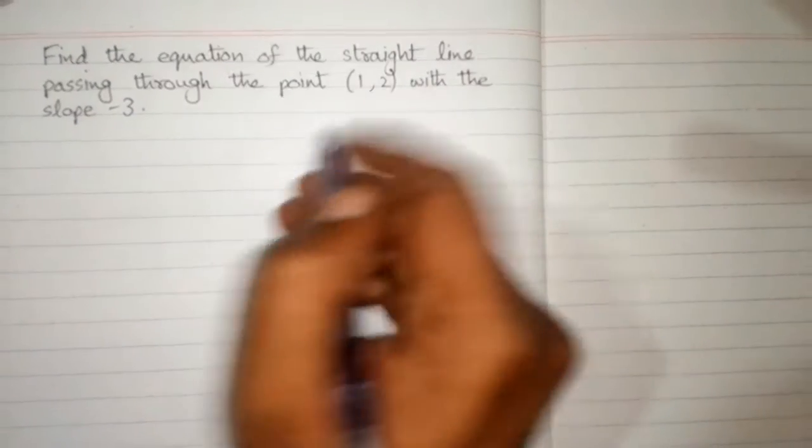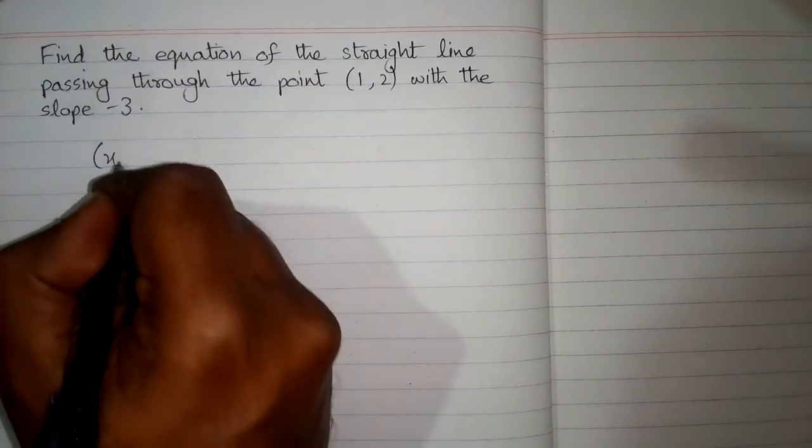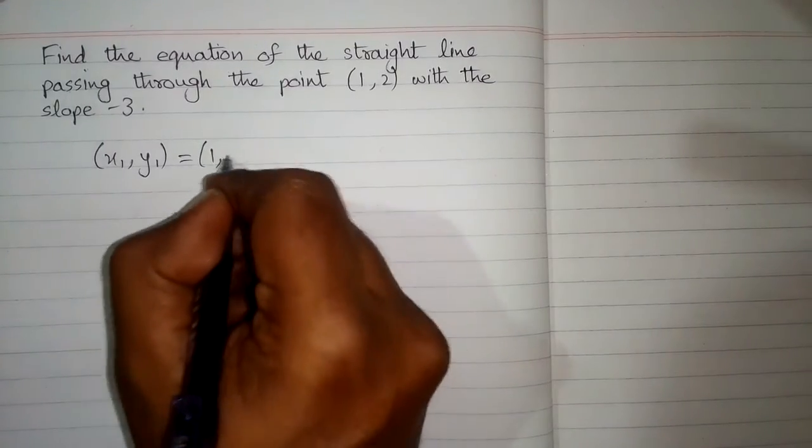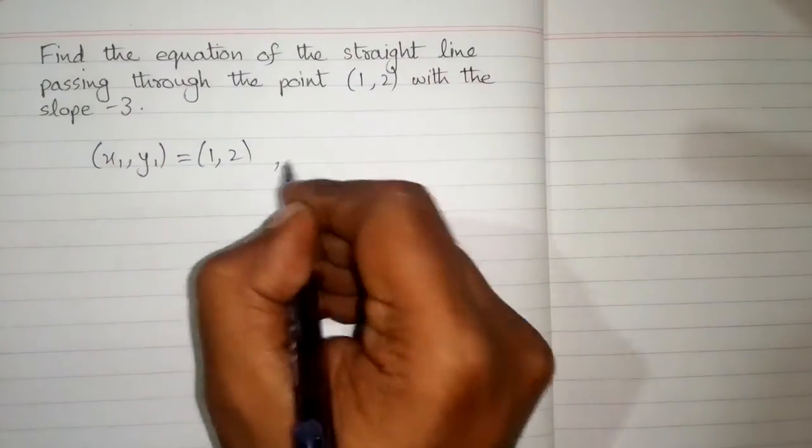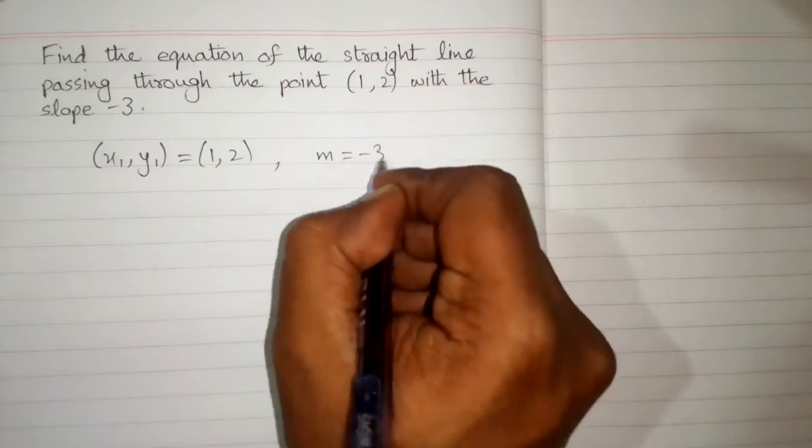So first of all we have a point 1 comma 2 and we will suppose that this point is x1 y1. So we have x1 y1 is equal to 1 comma 2 and the slope of the line m is equal to minus 3.